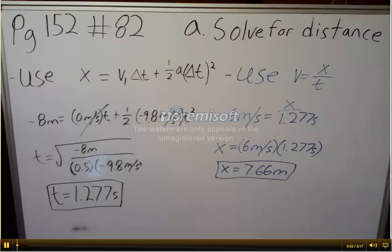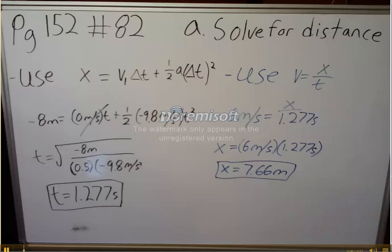Hello everyone, this is problem 82 of chapter 4. Part A of the problem asks us to solve for the horizontal distance to the rocks when the seagull lets go of the clam.